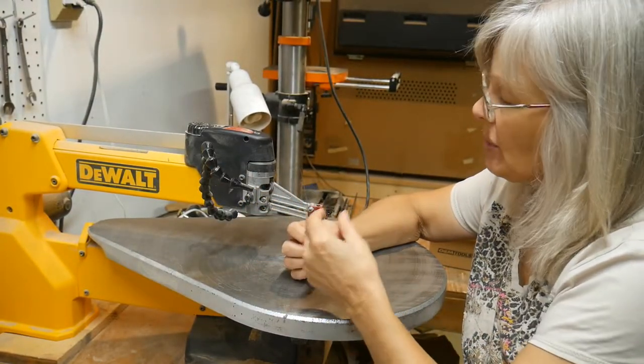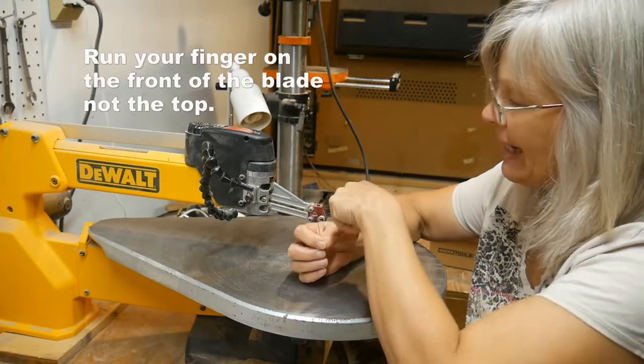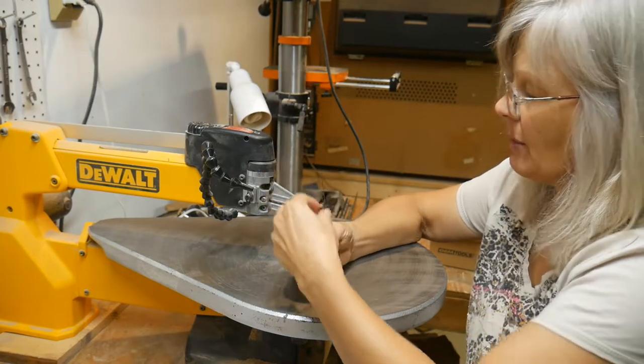So I'm using a number 5 scroll reverse blade, and if you don't know which direction to put it in, run your finger on the top of it. The smooth end goes down, the rough end goes up.